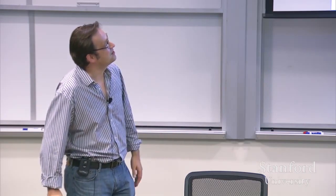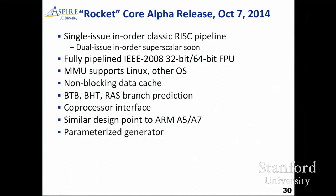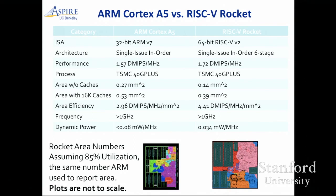Rocket was released last week. It's a classic single-issue in-order core, but a dual-issue version is coming very soon — very similar to an ARM A5 right now, and will support something similar to an ARM A7. It has a branch target predictor, branch history table, and return address stack — a pretty sophisticated simple core designed to be an application processor. It has a coprocessor interface to make it easy to add accelerators. We did a comparison: ARM publishes numbers for the A5 with no floating-point unit and no NEON. Mapping our Rocket core to the same technology, we're smaller, faster, much lower power, and 64-bit instead of 32-bit. It's not a completely accurate comparison, but just to give a feel, we're pretty competitive.